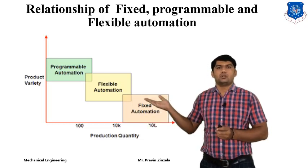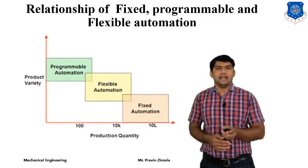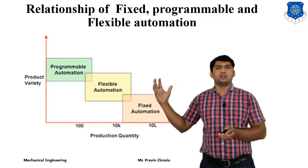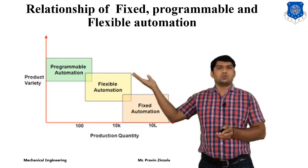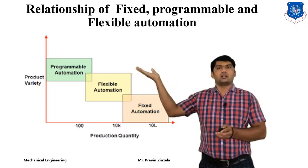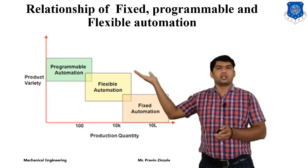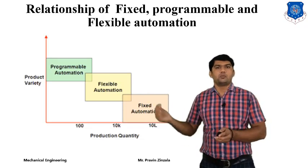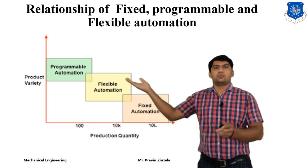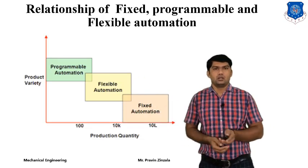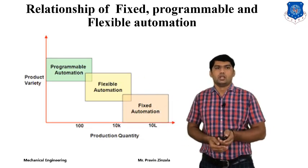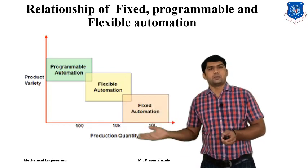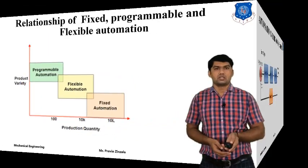According to the requirement or application, we must select the appropriate type of automation — fixed, programmable, or flexible. Flexible automation offers medium production quantity, medium product variety, and medium quality compared to fixed and programmable automation. We select different automation types based on our specific requirements.